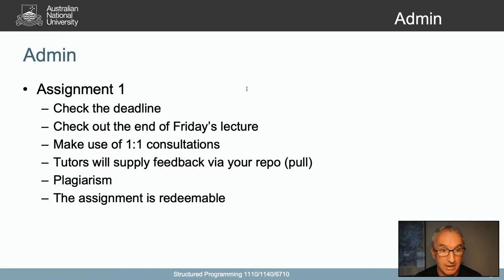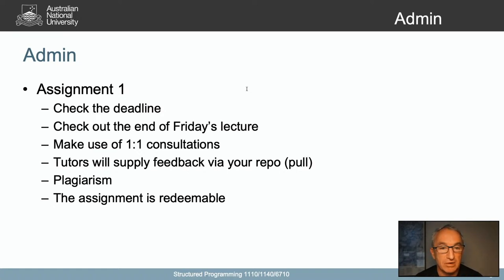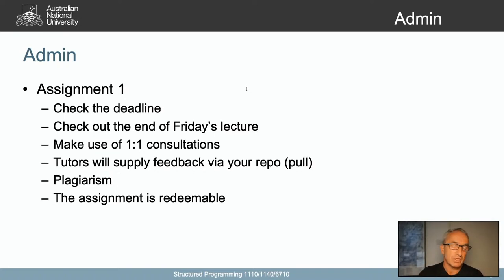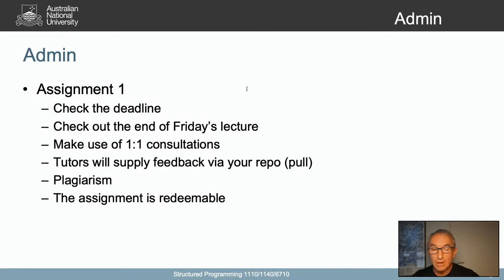Make sure by the end of Thursday you've got something reasonable pushed to GitLab that's passing some tests, then incrementally improve it. If on Thursday night you get two-thirds of the assignment working and then on Friday you accidentally screw it up, don't panic. We will go backwards in time — we won't extend the deadline, but you can send a private message to your tutor and ask them to mark an earlier commit.